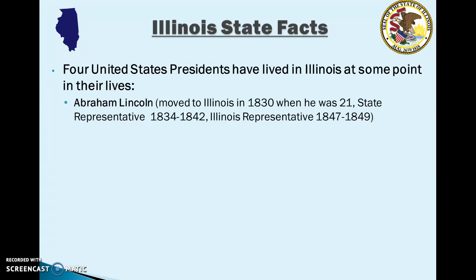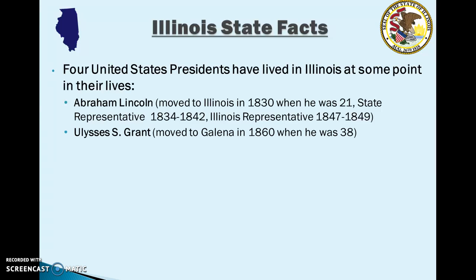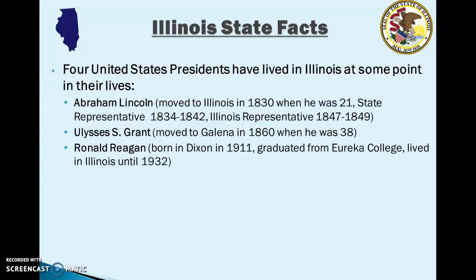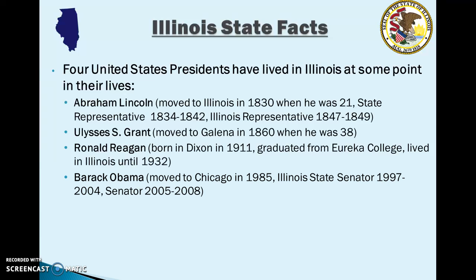Ronald Reagan was actually born in Dixon, Illinois in 1911. He graduated from Eureka College in Eureka and lived in Illinois until he graduated in 1932. And finally, most recently, Barack Obama moved to Chicago in 1985. He was an Illinois state senator and United States senator before he was elected president in 2008.